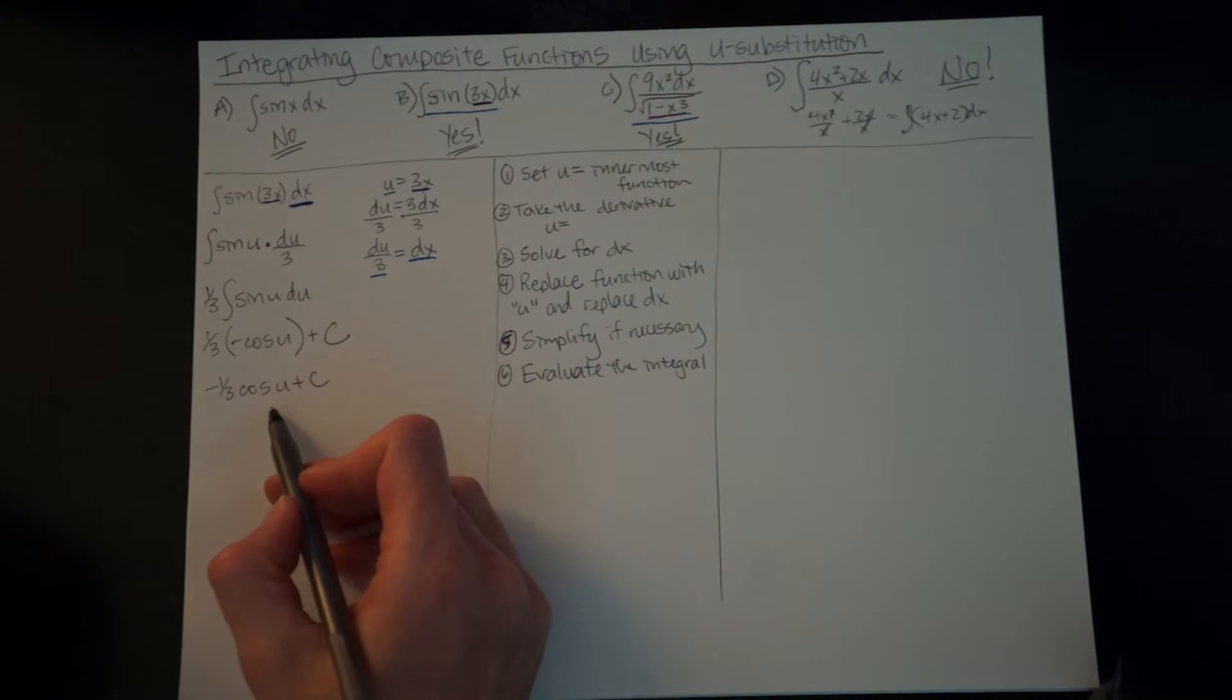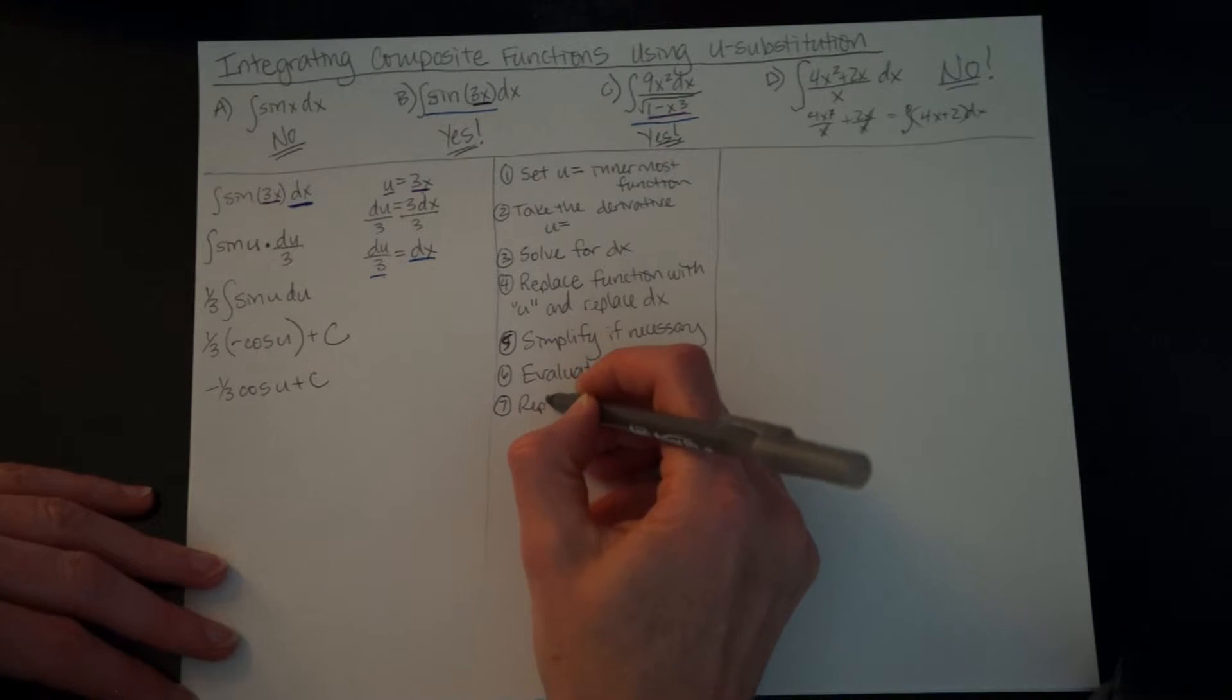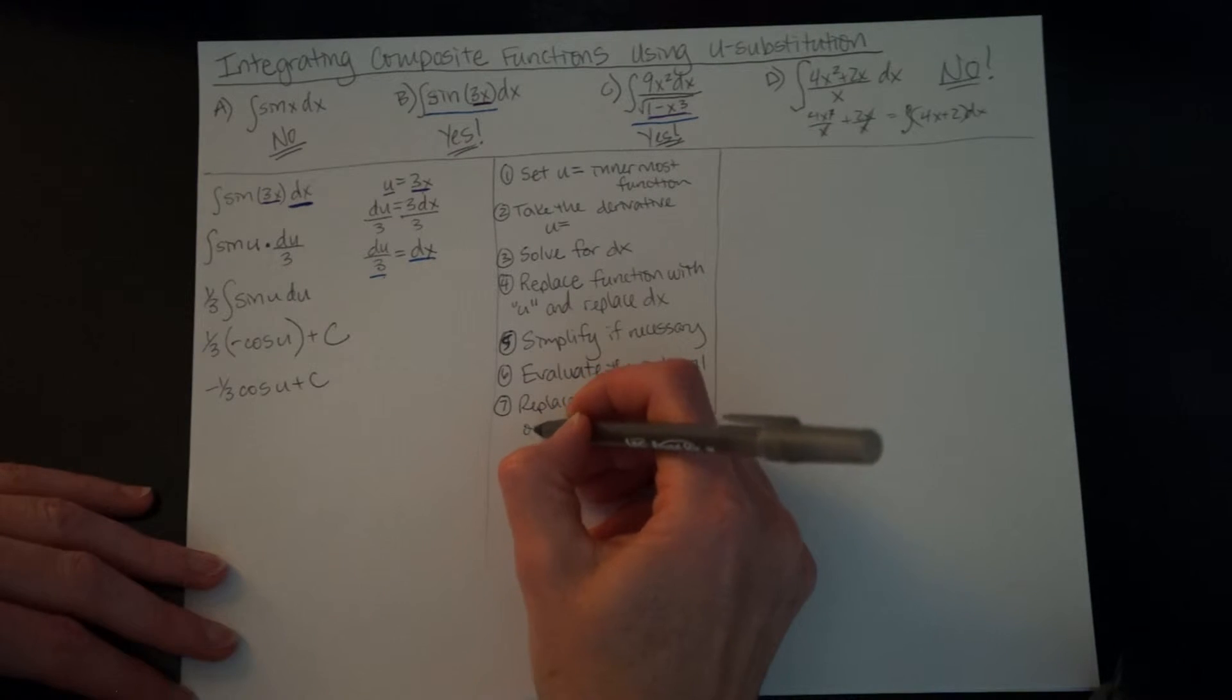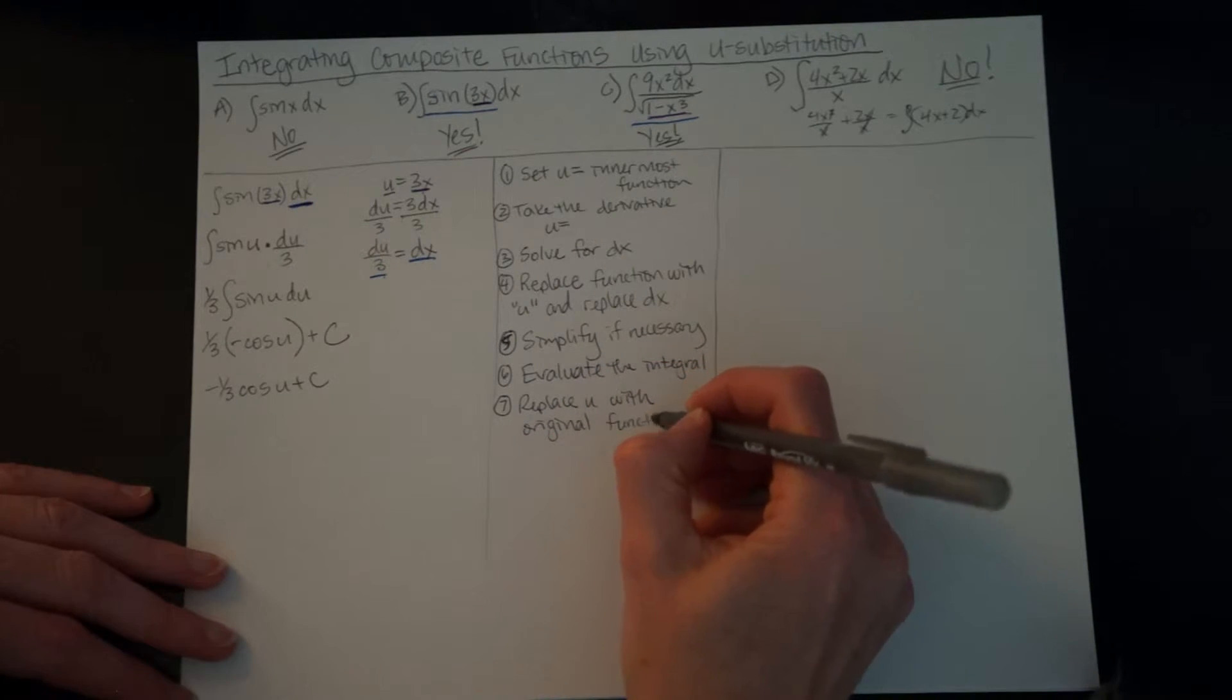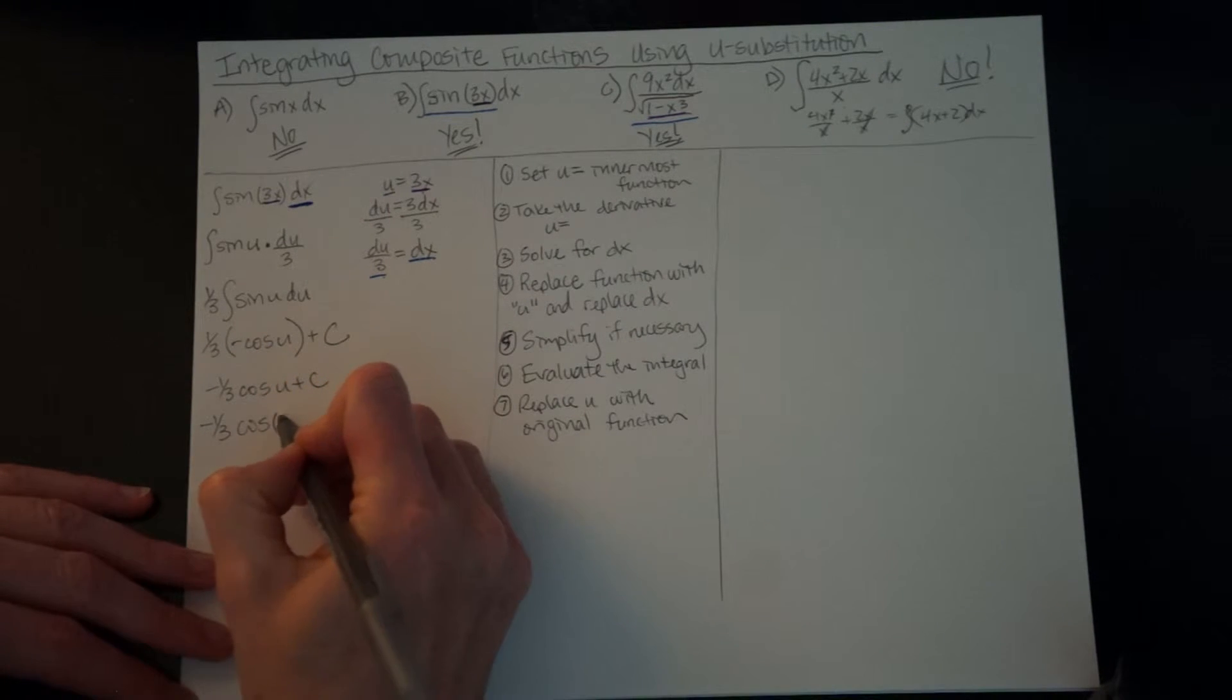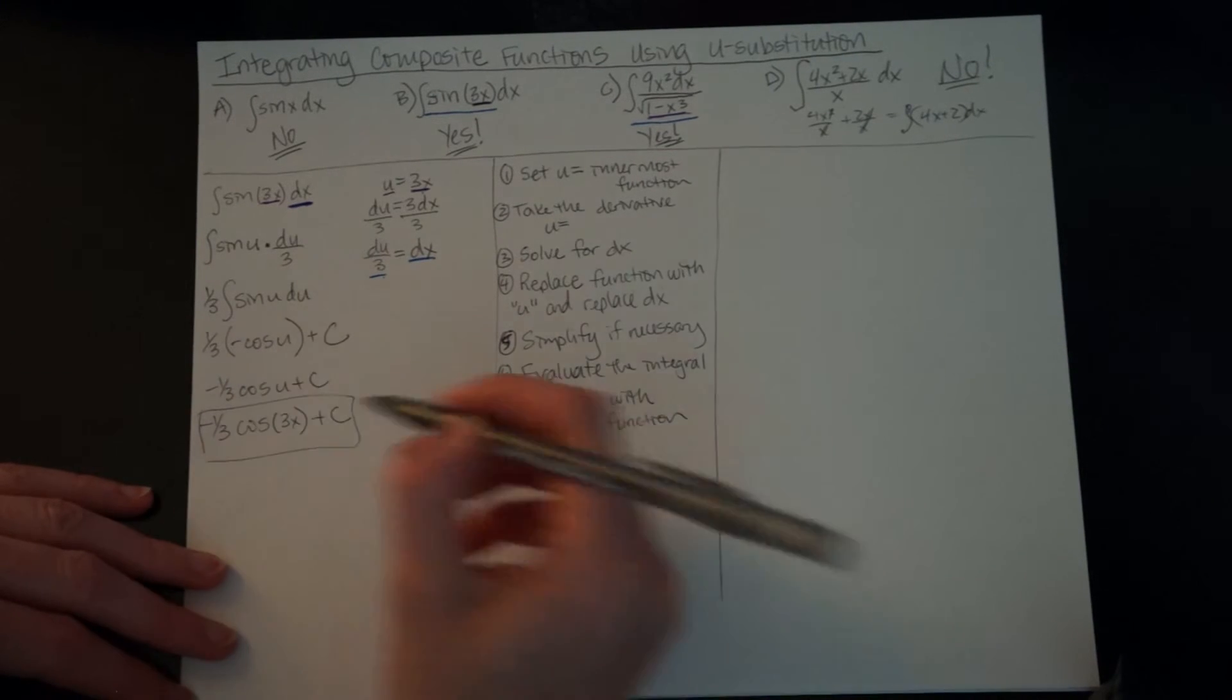And I still have u. This is a problem. I want to make sure my very last step is replace u with our original function. Okay, so that was 3x. We go back and we put it back in. Cosine of 3x plus c. And this is our final answer.